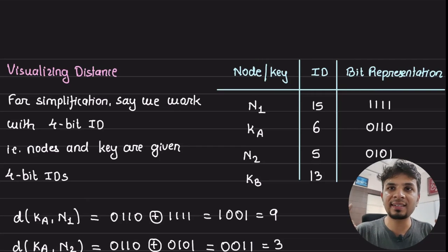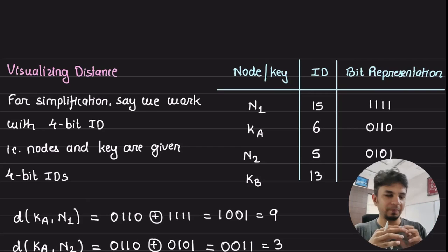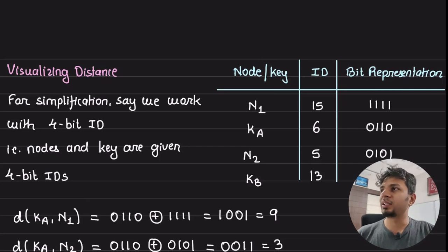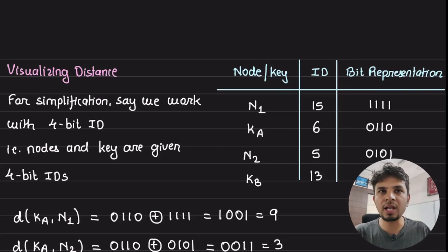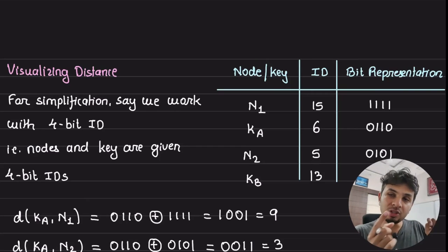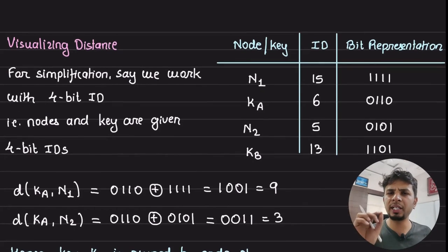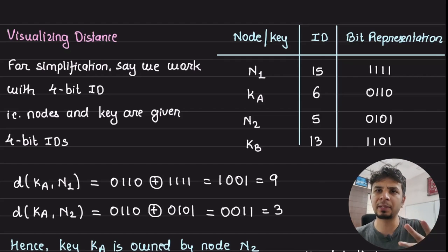Now that we have a distance metric, let's visualize it — this will help us define routing. Given distance is based on XOR (not physical distance you can plot on X-Y coordinates), we need a different approach. To simplify things, instead of 160-bit representation, let's use 4-bit representation, where unique values range from 0 to 15, both inclusive.